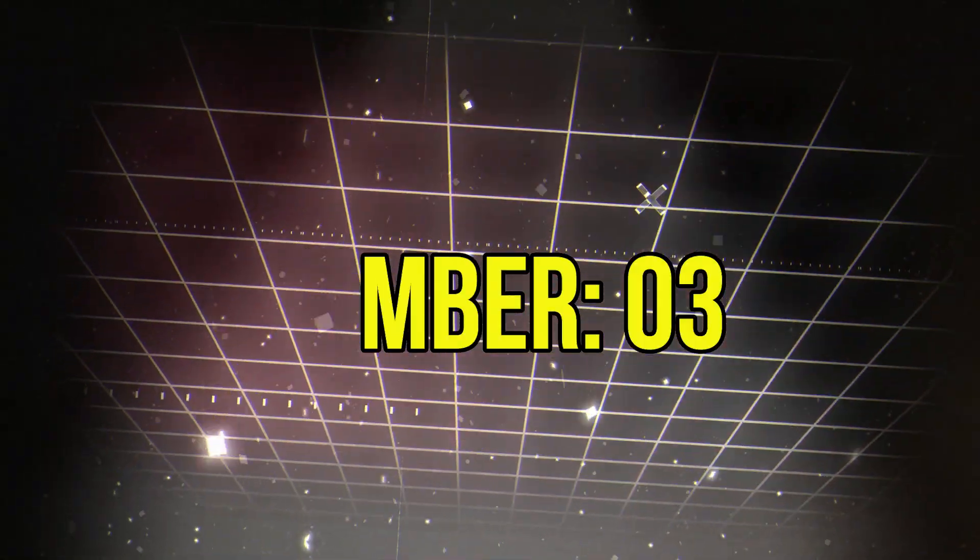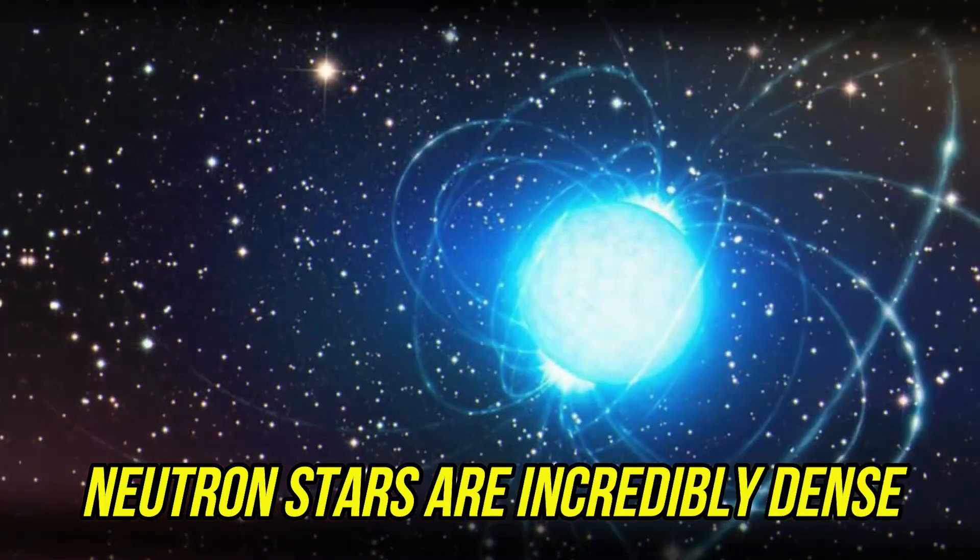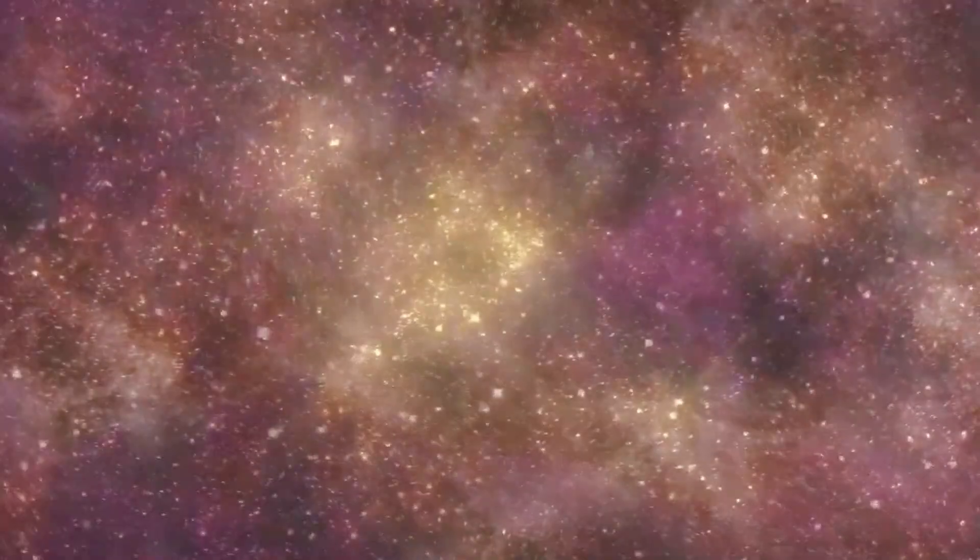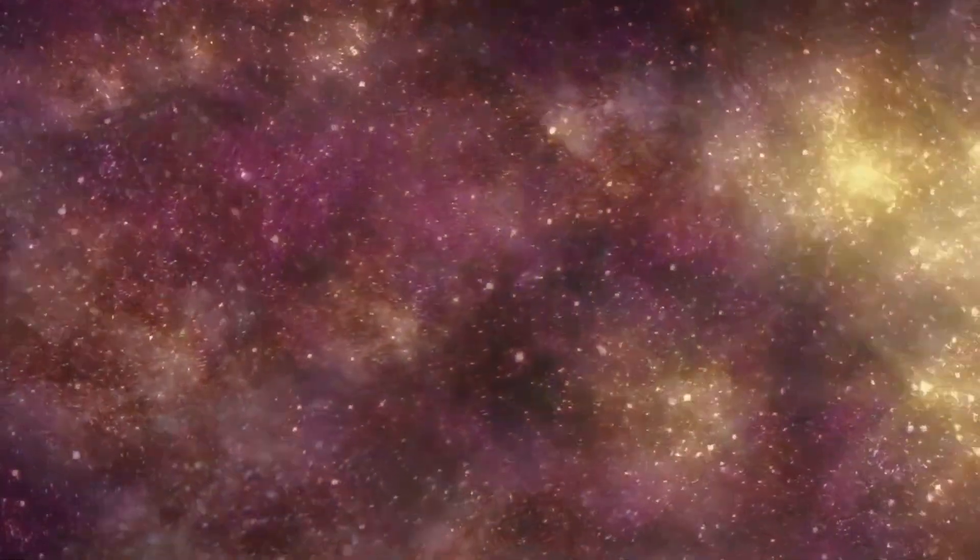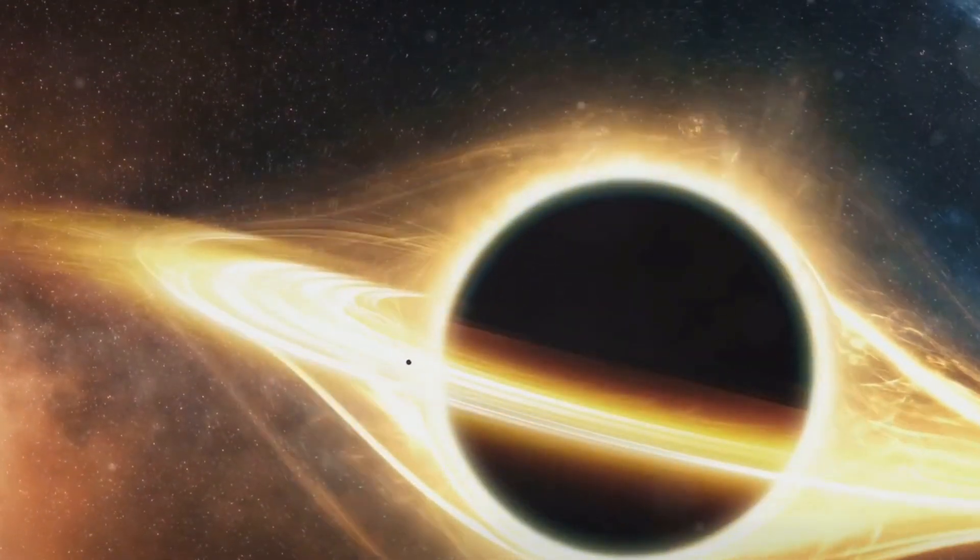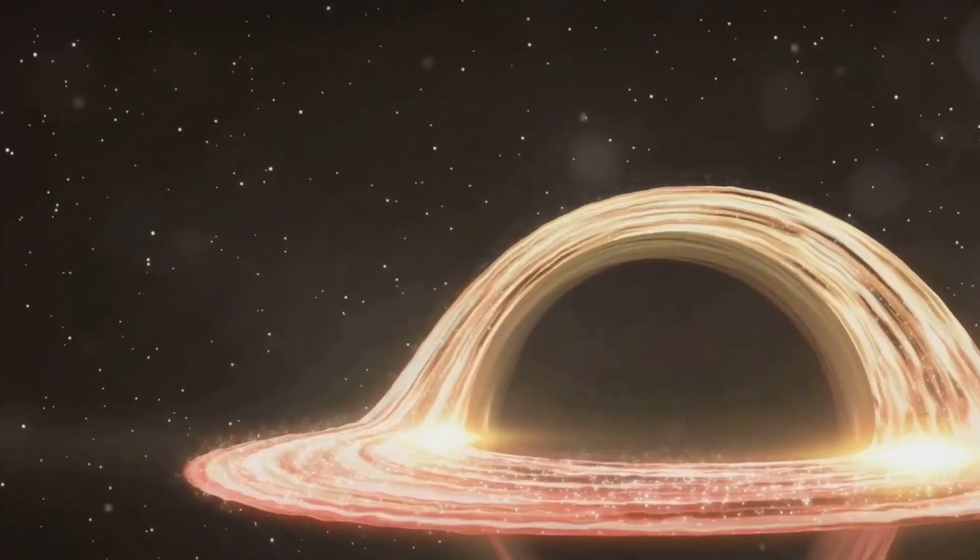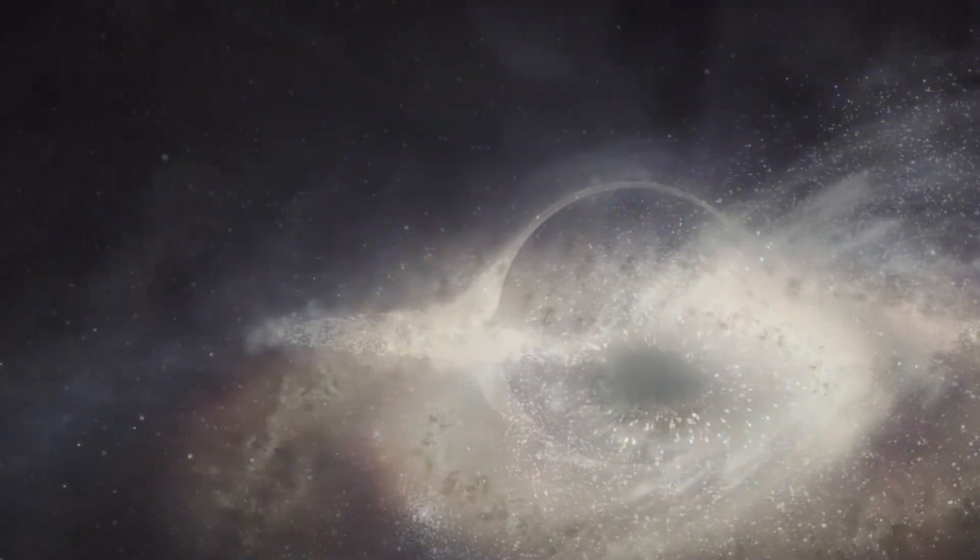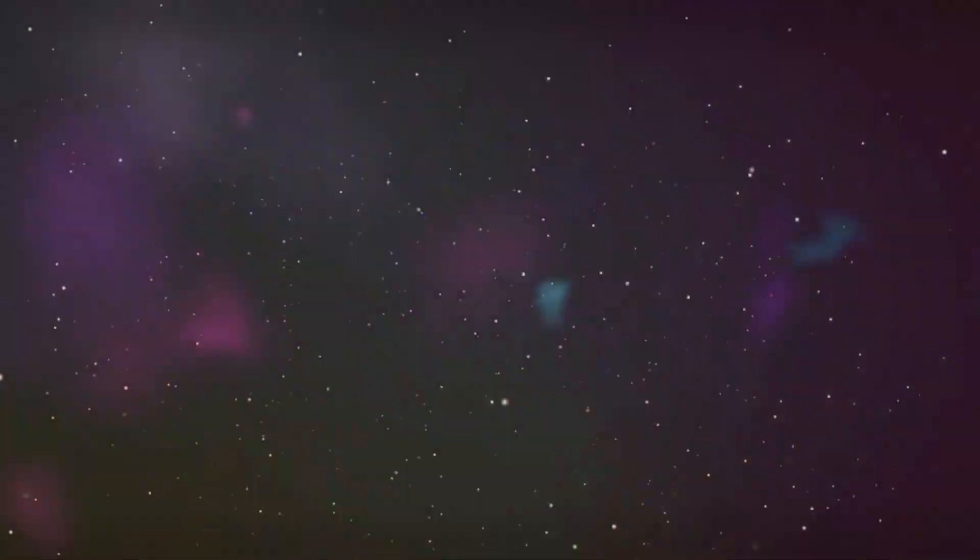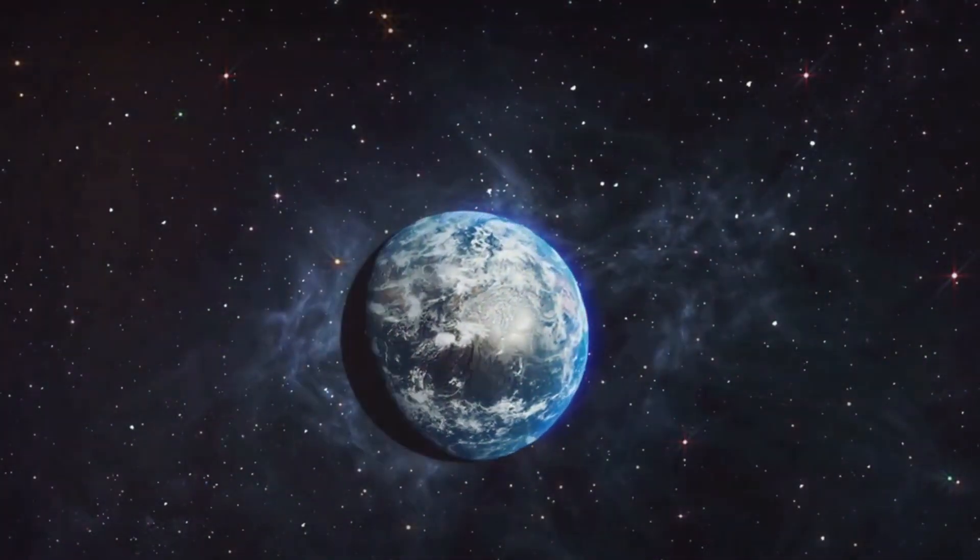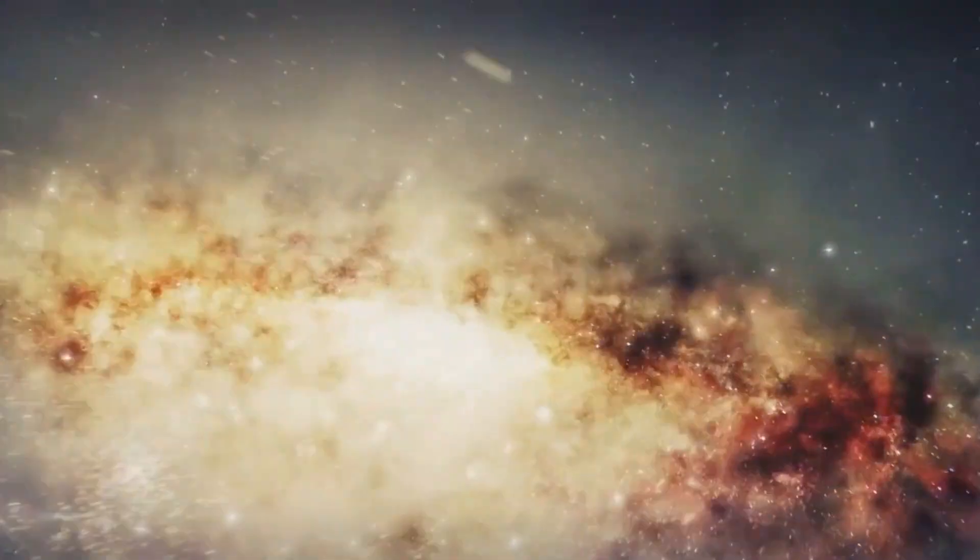Number 3. Neutron stars are incredibly dense. Neutron stars are among the densest objects known to science. These remnants of supernova explosions pack a mass greater than the sun into a sphere just 10 to 20 kilometers in diameter. To put this in perspective, a sugar cube-sized piece of neutron star material would weigh about 100 million tons on Earth.